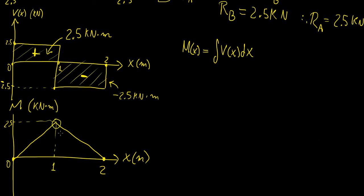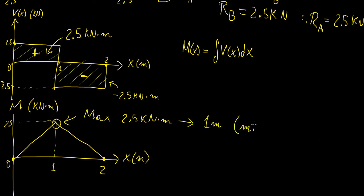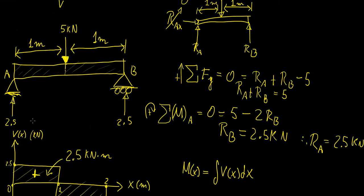From the bending moment diagram we can see that the maximum bending moment occurs right at the middle of the beam, as expected from the symmetry of the problem. The maximum bending moment is 2.5 kN·m at x = 1 m. This is quite important when dealing with bending stress and similar analyses, as we use these diagrams to identify the locations where maximum values occur. In the next video we'll continue with more examples and analyze more complicated structures.